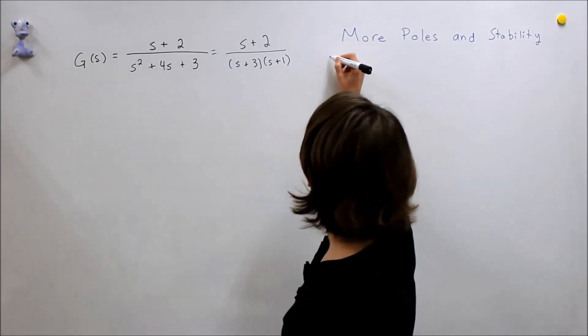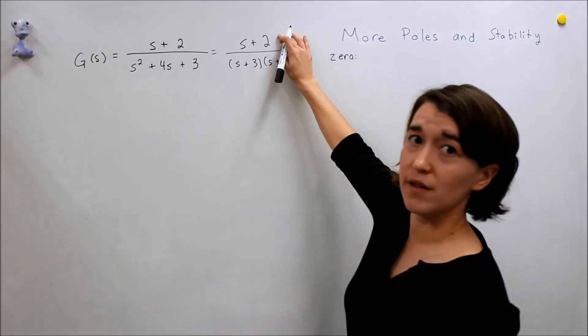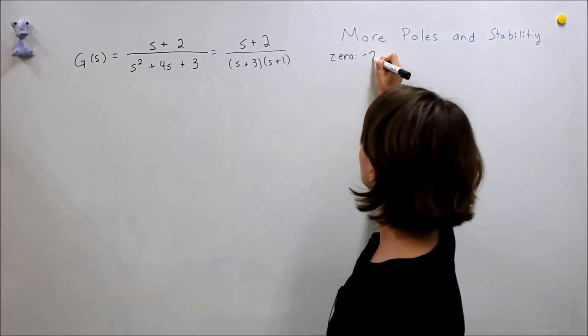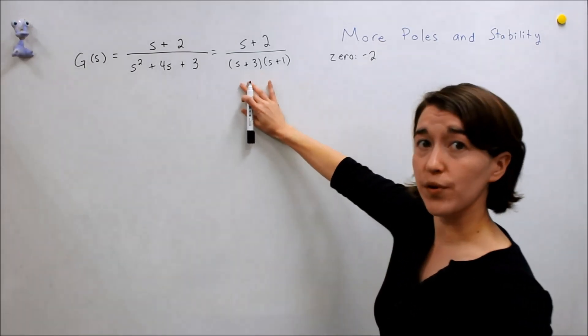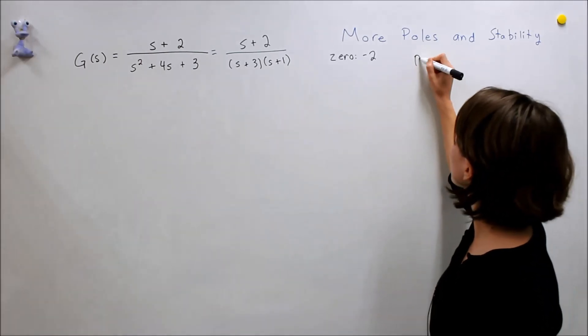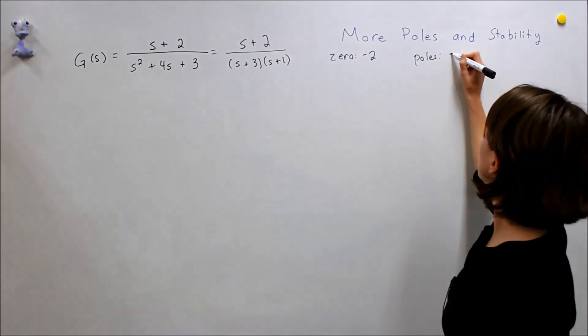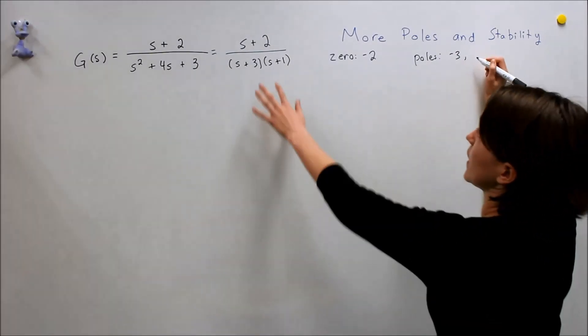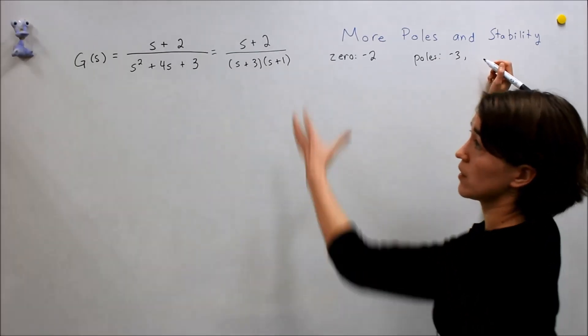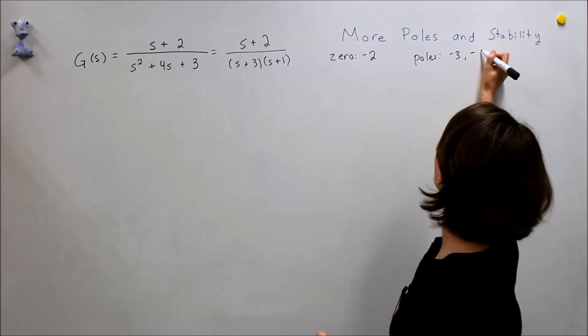First let's write our zeros. We only have one, so our zero here is negative 2. Here we're going to have two poles. Our poles would be negative 3 and negative 1, because either of those values will make the denominator zero, which makes the transfer function go to infinity.